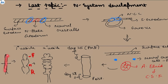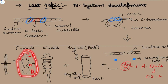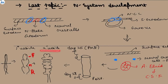The neural tube proliferates to form the primary vesicles: prosencephalon, mesencephalon, and rhombencephalon. These primary vesicles further proliferate to form five secondary vesicle structures: telencephalon and diencephalon from prosencephalon; mesencephalon remains as midbrain; and rhombencephalon gives metencephalon and myelencephalon.